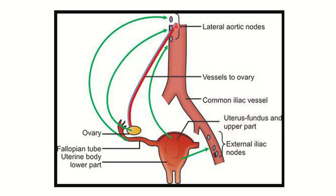In this picture we can see the ovary drains to the lateral aortic lymph node, which is also known as the para-aortic lymph node. So the para-aortic lymph node, or lateral aortic lymph node, is where the ovary primarily drains.